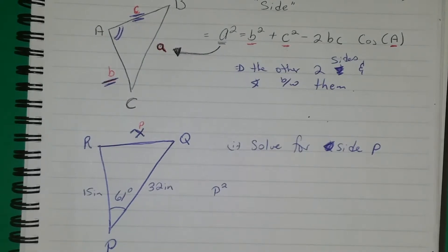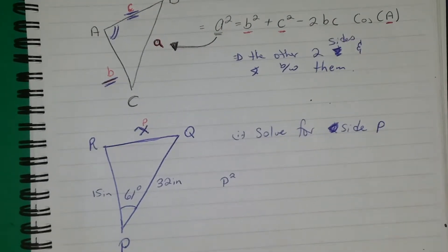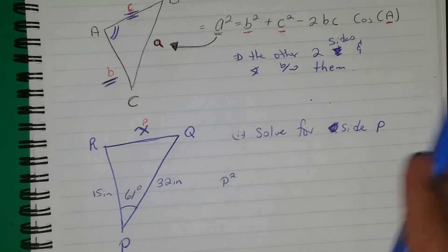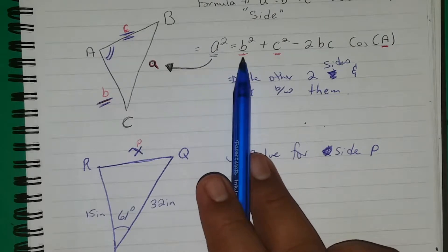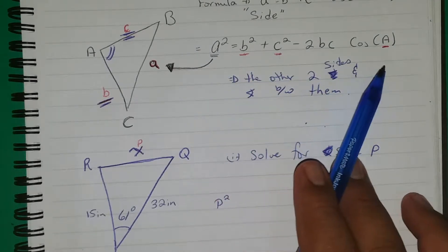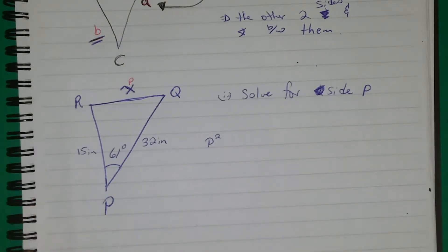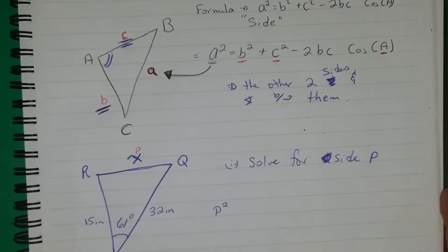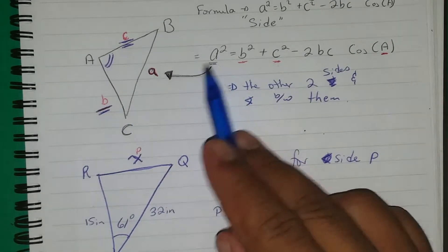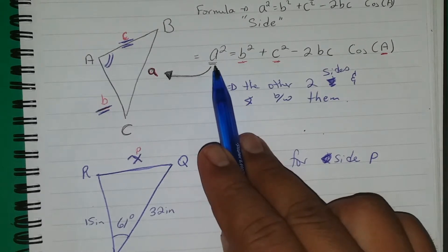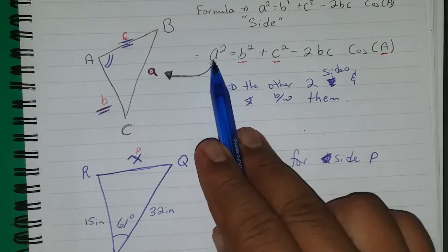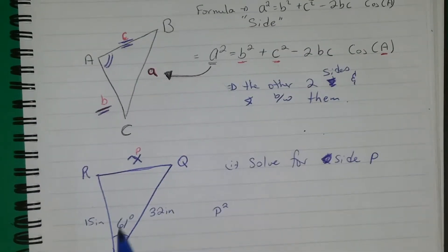We want to continue by finding the length of P. The formula is a squared equals b squared plus c squared minus 2bc cosine of angle A. With this problem, we no longer have a, b, and c, but we can rewrite the formula with respect to how this triangle is labeled. We are solving for side P, so we start the formula with P.